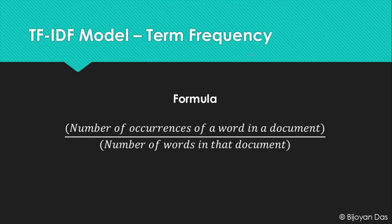Here is the formula for term frequency: the number of occurrences of a word in a specific document divided by the number of words in the whole document. For example, in the sentence 'you are beautiful', the term frequency of 'beautiful' is one divided by three, because 'beautiful' appears once and there are three words total — so TF of 'beautiful' is 1/3.